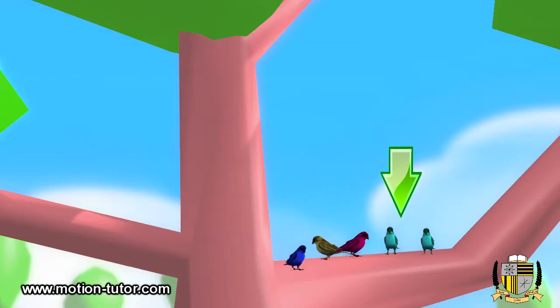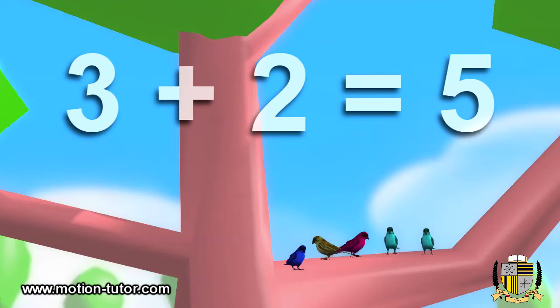Now there are five: one, two, three, four, five. Five birds on the branch. So that means three plus two is equal to five.